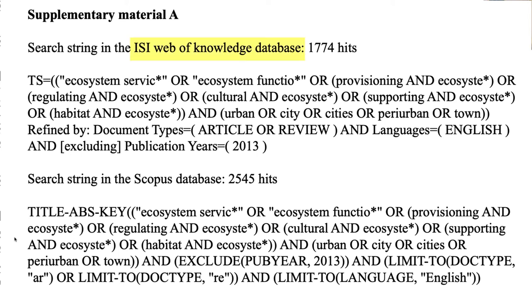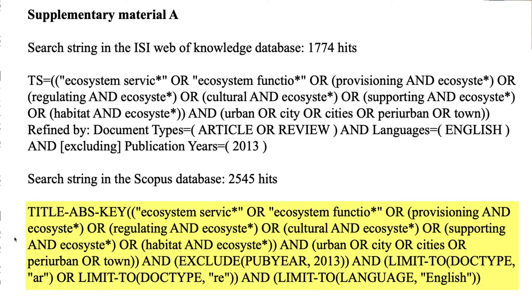Their search was run in two different databases. First, they ran it in what was then called Web of Knowledge — that's now Web of Science — and you can see that they did TS as a topic search. They created this long search string linking together their terms using Boolean operators, truncation, and various things like double quotes and parentheses. They also took that search and basically replicated it into Scopus. The topic search in Web of Science is essentially the same as doing a title, abstract, and keyword search in Scopus. They documented how many hits they retrieved in each database. You could take a search like this and copy and paste it across multiple databases and it will retrieve the same kind of results.